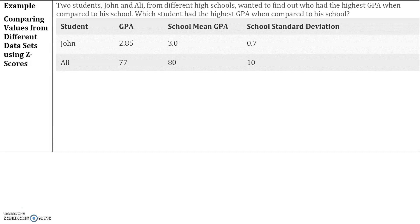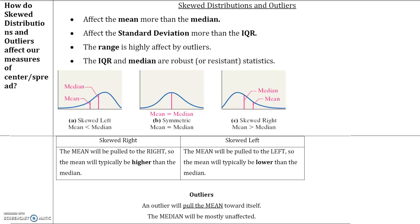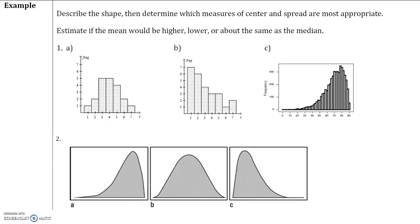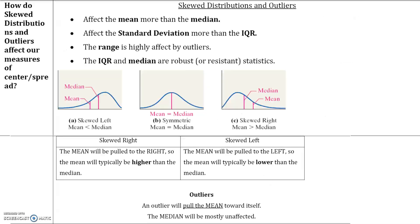Please do the following example. We're given the GPA of a student, the school mean GPA, and a standard deviation for two different students. Figure out which student had the highest GPA when compared to his or her school. We will talk about skewed distributions and outliers in class, so please look over these and we'll go over them in class.